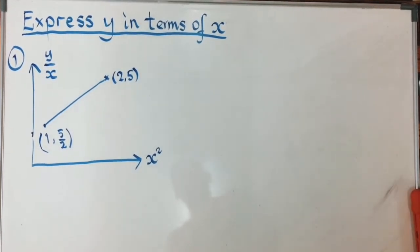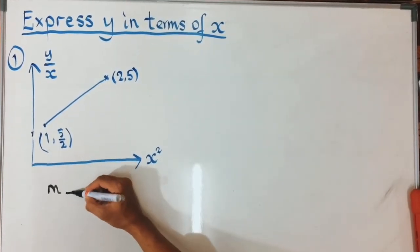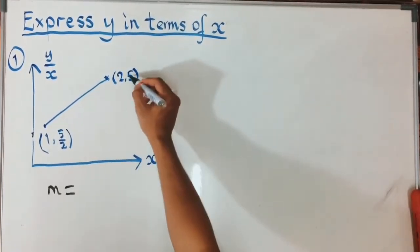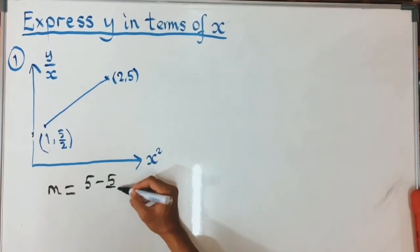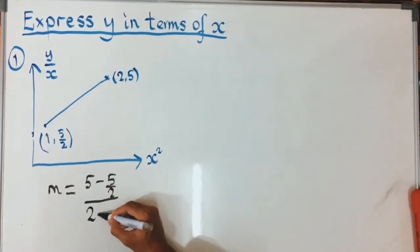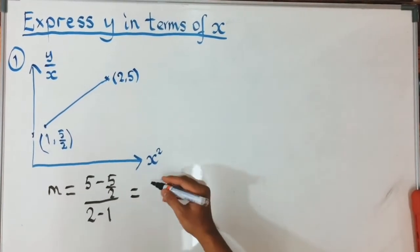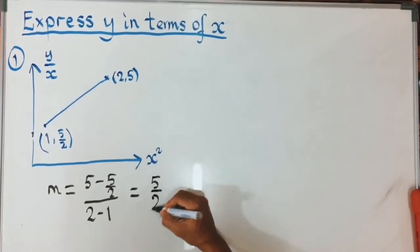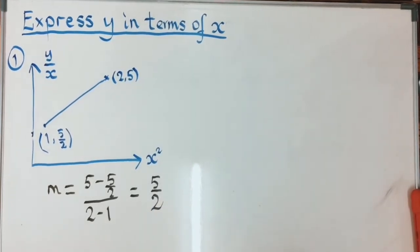The first thing is to find the gradient. We find the gradient using the formula: m equals (y2 minus y1) over (x2 minus x1). So that's (5 minus 5/2) over (2 minus 1), which gives us (10/2 minus 5/2) over 1, which equals 5/2. So your gradient is 5/2.